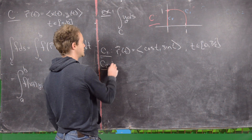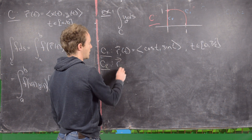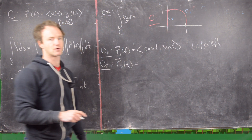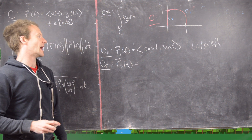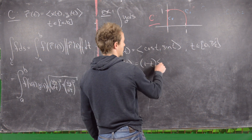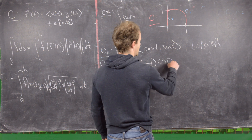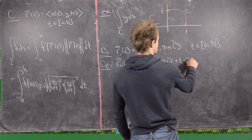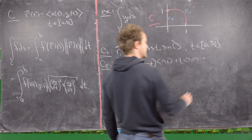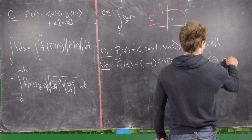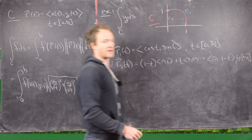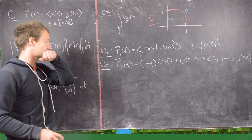For C2, r2(t) is the line segment starting at (0,1) and ending at (0,0). Using the trick, that's (1−t)(0,1) + t(0,0), which gives (0, 1−t). Here t is on the unit interval, as always when parametrizing a line segment this way.